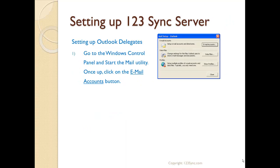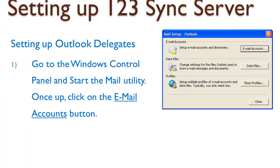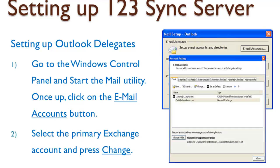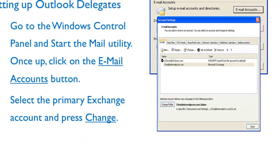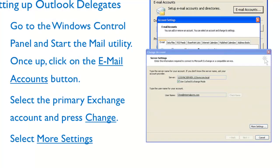So, how do you set up Outlook Delegates? You go to the Windows Control Panel and start the Mail Utility. On the Mail Utility, there is an option called Email Accounts. Once you click on Email Accounts, you get the listing of email accounts — click on the Exchange account that you use, since you can only have one Exchange account. Click on that and click the Change button. Once you get to the Change button, click on the More Settings button, which will provide more access to the Exchange setup features.